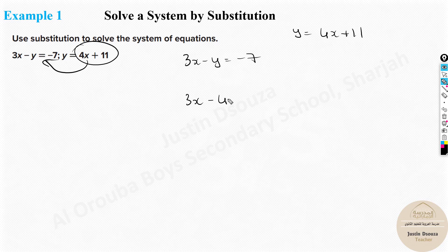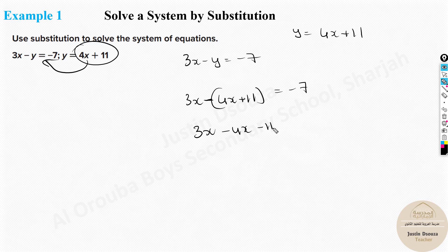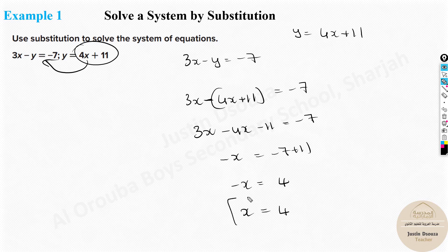Substituting y equals 4x plus 11 into 3x minus y equals negative 7 gives us 3x minus (4x plus 11). Use brackets here because this is y and the minus sign will be multiplied throughout. Simplifying: 3x minus 4x minus 11 equals negative 7, which gives minus x equals negative 7 plus 11, so minus x equals 4. Taking the sign to the other side, x equals negative 4.